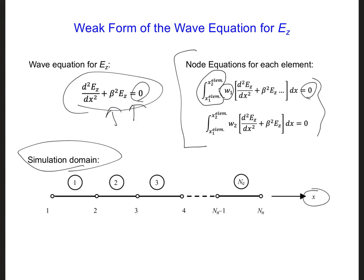And we're doing the same thing for the second node of each element using a second weighting function, w2. That's also equal to 0 in a weighted sense. This is typically called the weak form of the differential equation we're solving because we're enforcing this equation in an average and therefore weaker sense.